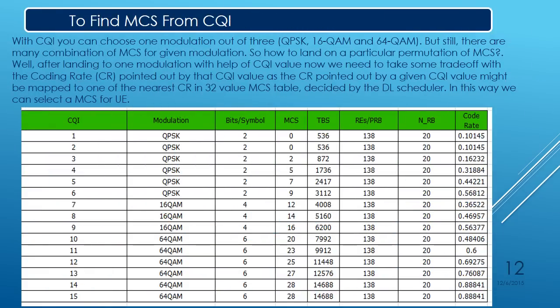Now CQI to MCS mapping: we already know that CQI values 1 to 6 map to QPSK, 7 to 9 map to 16 QAM, and 10 and above map to 64 QAM. Now we need to map the MCS value. We cannot directly map the MCS value to a particular modulation scheme — it is not a fixed mapping. We need to consider the code rate to get the MCS value. A few examples are shown here.